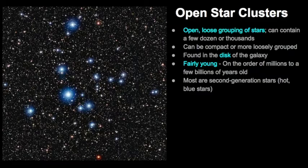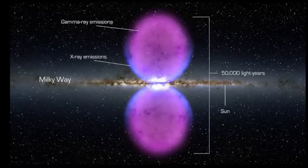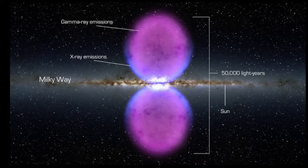These stars are different in the sense that they are second-generation stars, so they have formed out of stars that have previously lived and died. When you're looking at open clusters, they often contain hot and blue stars.